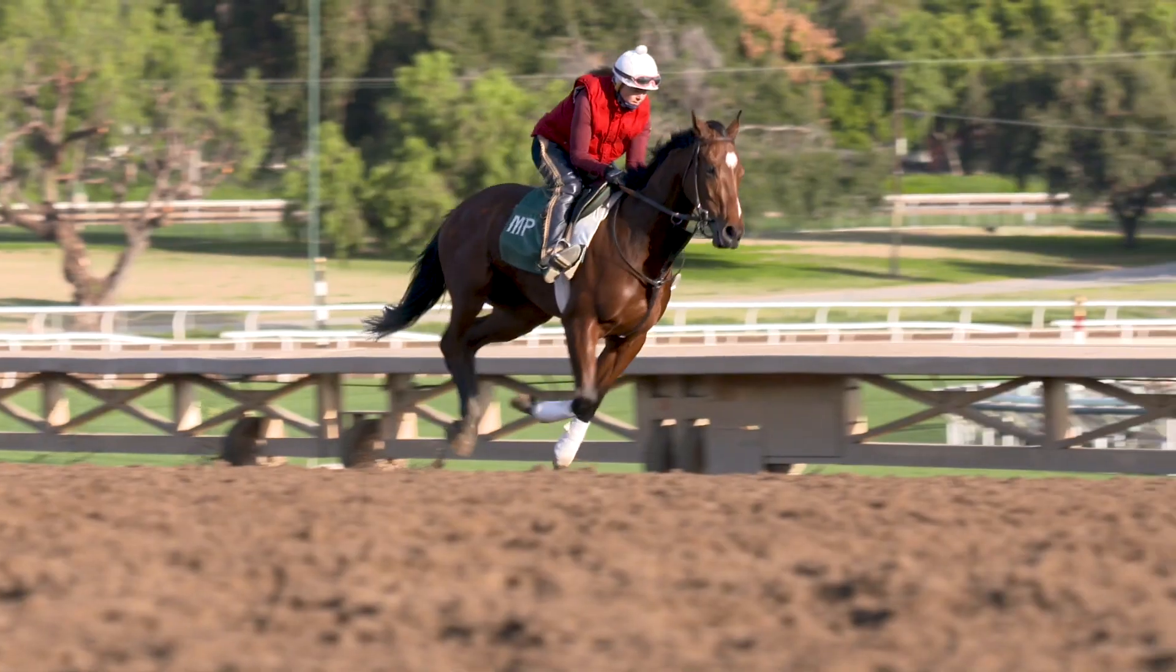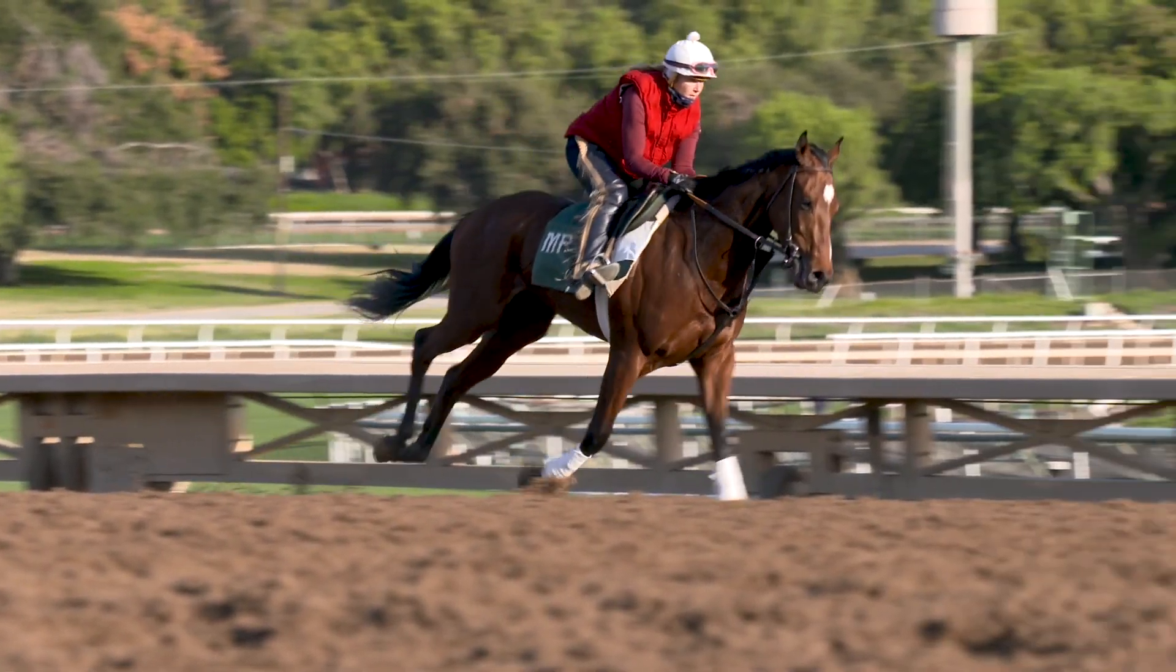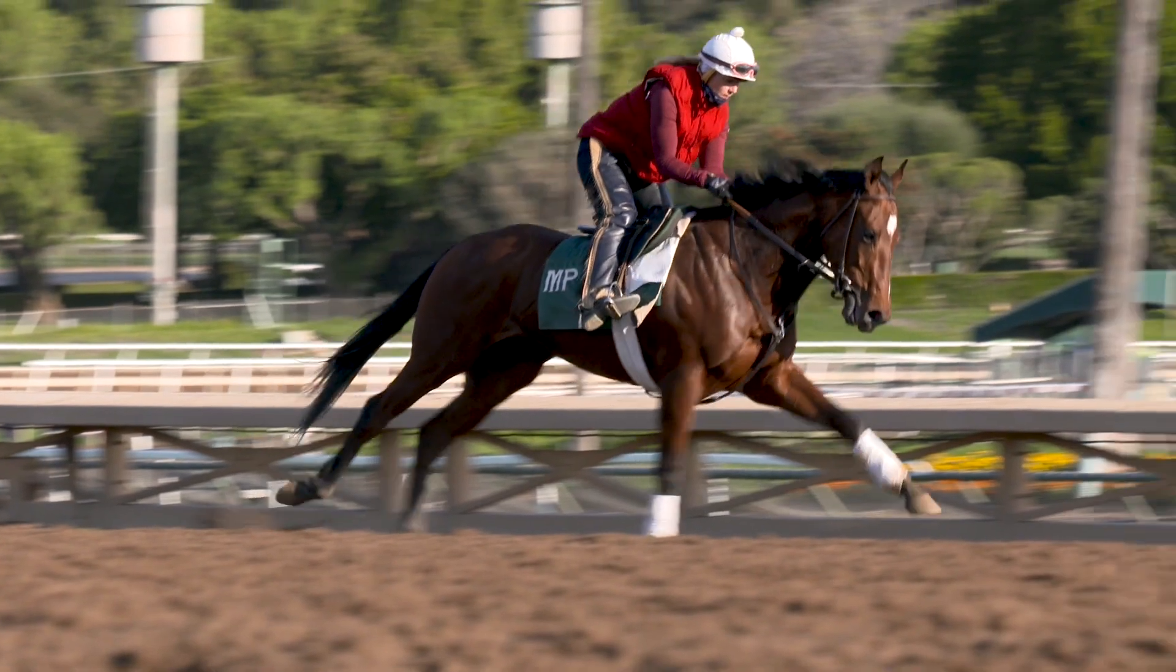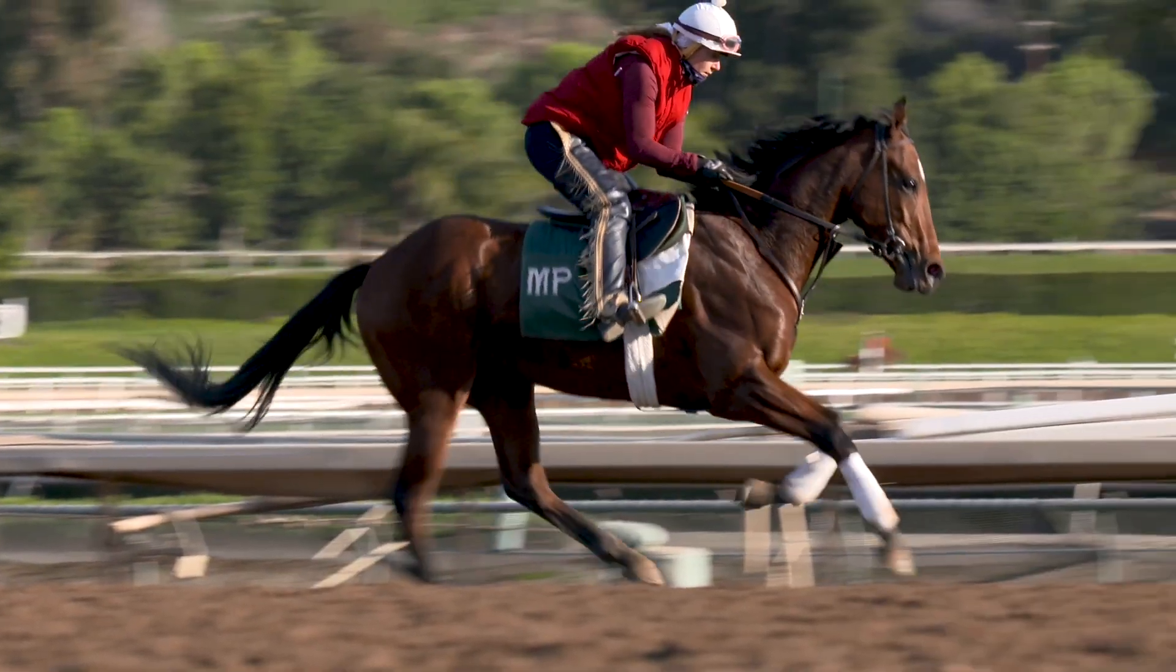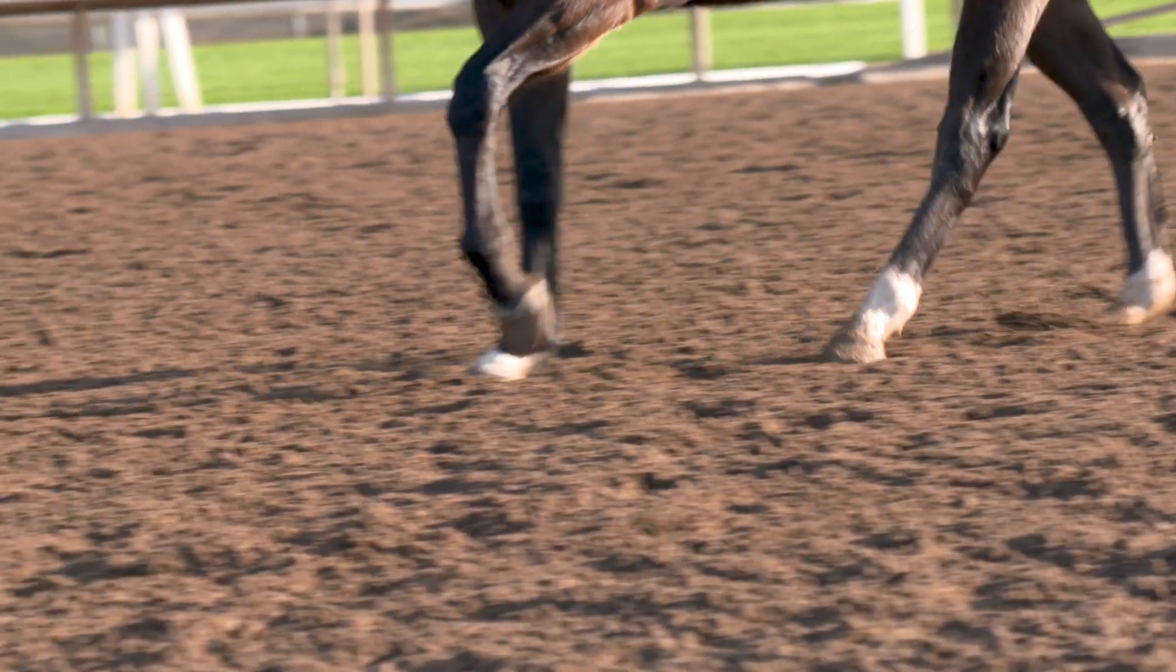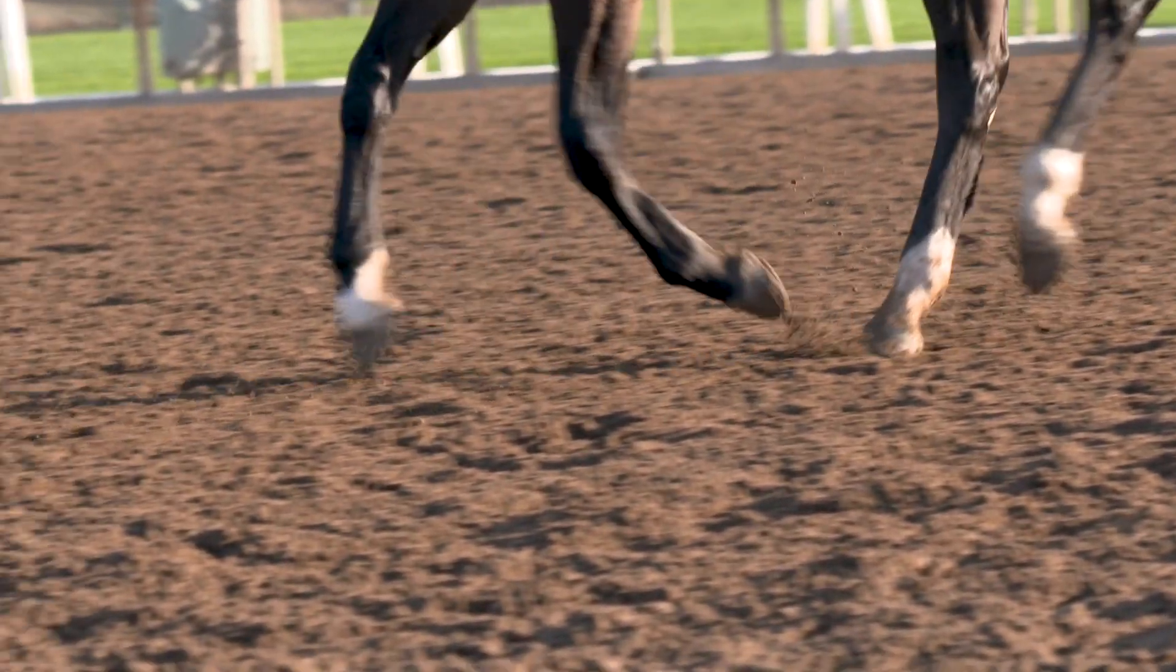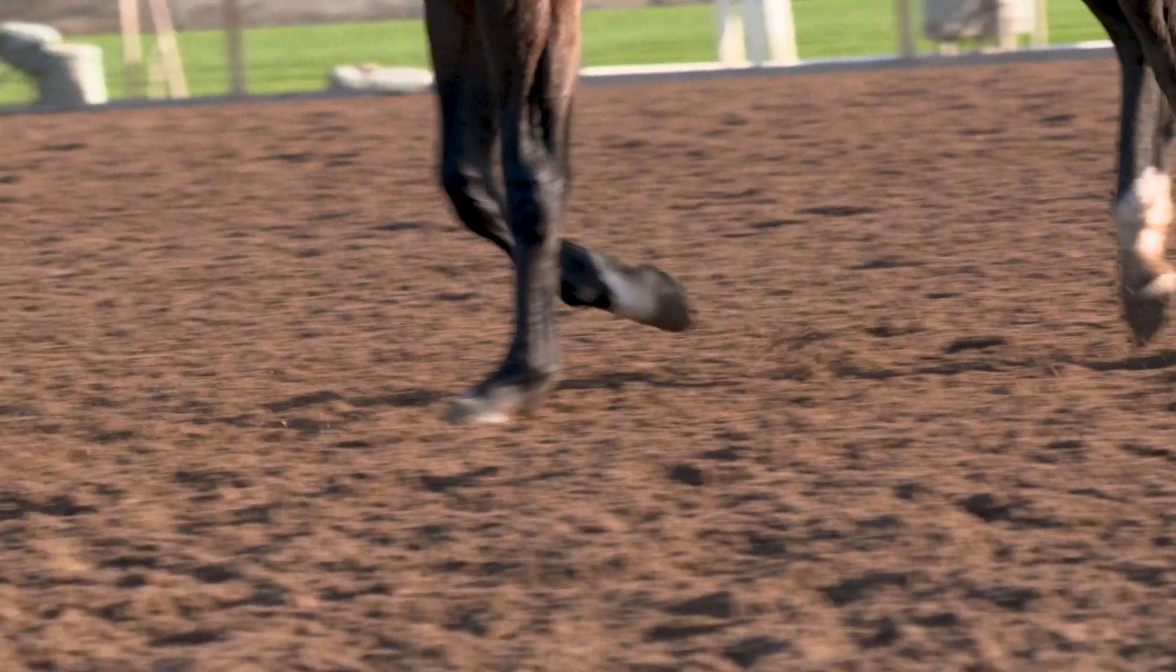The equine skeleton is a pretty remarkable design, and it was designed in such a way for the horses to be able to run really, really fast and cover a lot of ground. It would be like you running on one of your fingers, but that gives them the ability to be very efficient when they do that and run very fast.